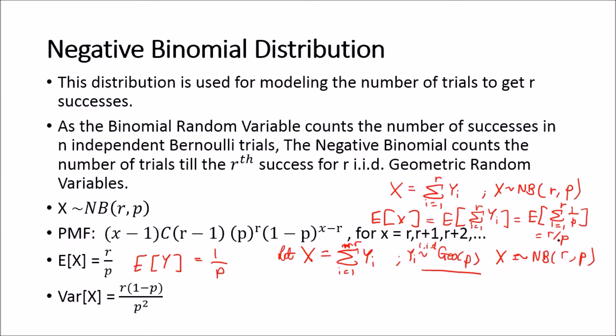The variance of X is given by R times (1−P) over P squared. That concludes the basic properties of the negative binomial distribution. It can be written as the summation of R IID geometric random variables. In fact, the geometric distribution is a special case of the negative binomial distribution — if we set R equal to 1, we arrive at the PMF of a geometric random variable.